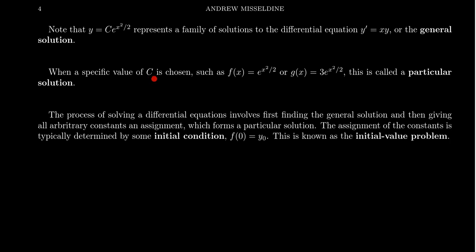Now, if a specific value for the parameter c is chosen, like in the example we did before, f of x was e to the x squared over 2 - that's choosing the parameter to be 1. And another example we did was g of x equals 3e to the x squared over 2 - we chose the parameter to be 2. In that situation, we get what's called a particular solution, a particular solution to the differential equation.